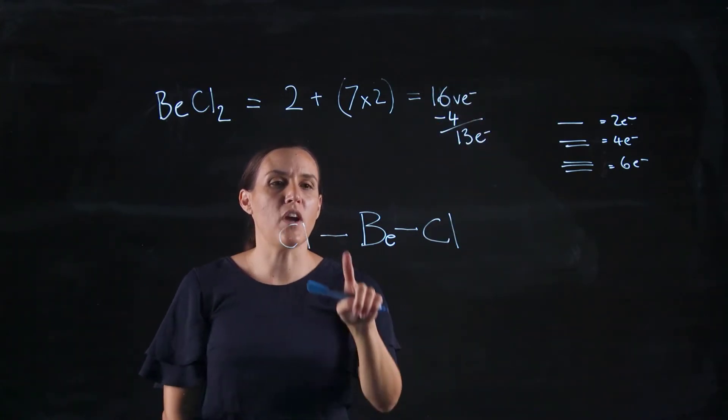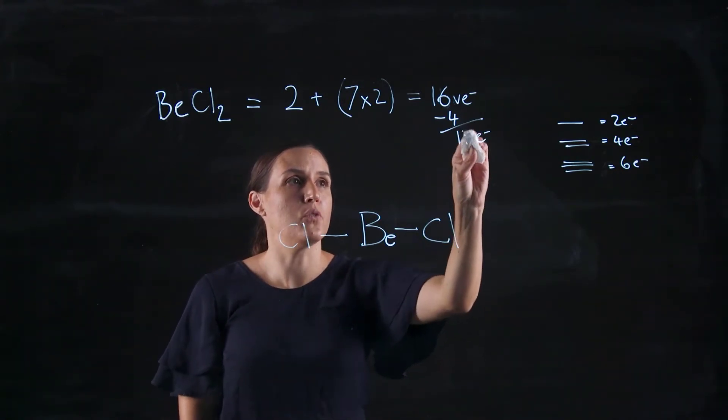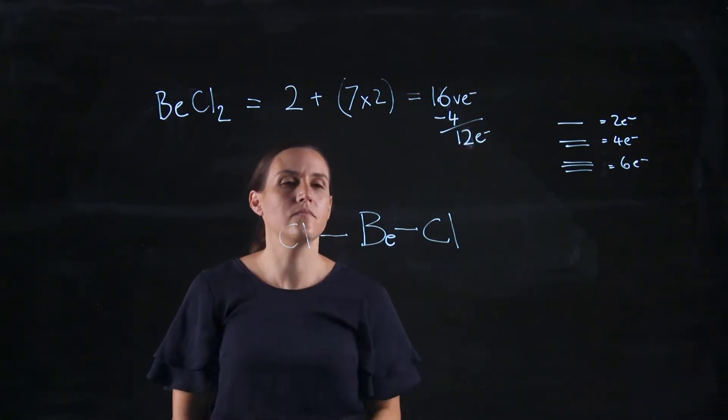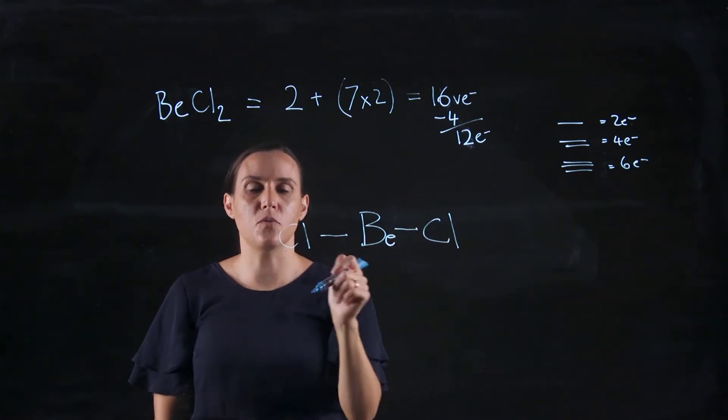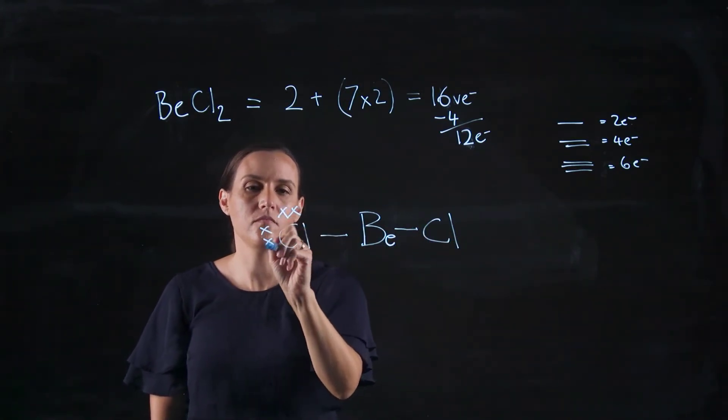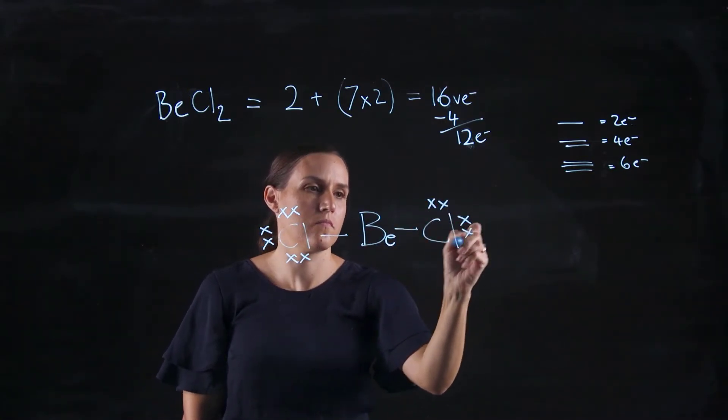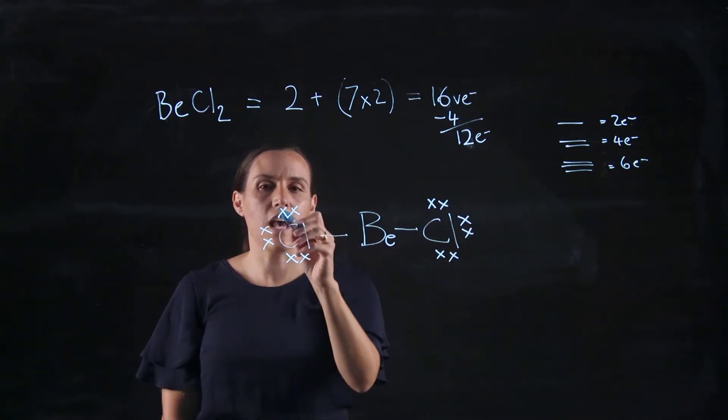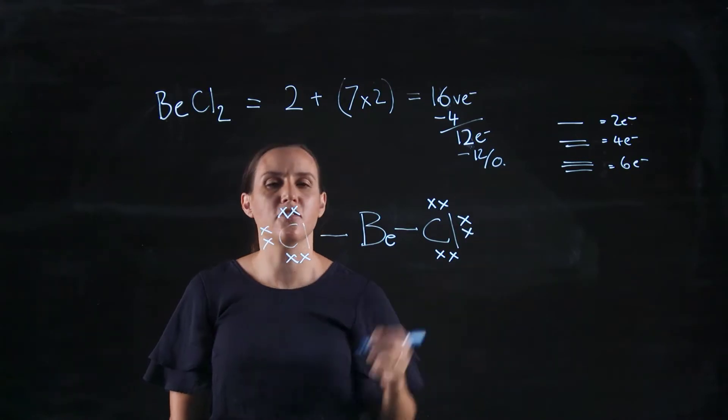So subtracting my four for putting in my two chlorides that are bonded to that central beryllium, I will have 12 electrons left over. So then I fill up my outer atoms and then I do my central one last. So I've used 2, 4, 6, 8, 10, 12. So I've got no electrons left over.